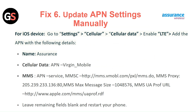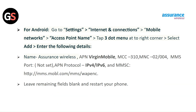Fix 6: Update APN Settings Manually. For iOS, go to Settings, then Cellular, then Cellular Data. Enable LTE and add the APN with the required details. Leave the remaining fields blank and restart your phone.